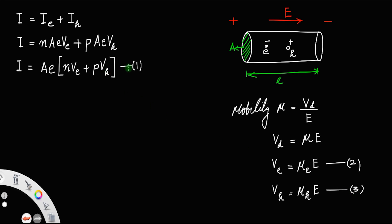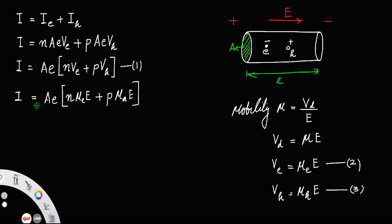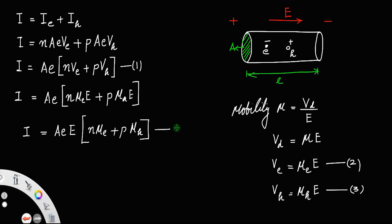Substituting equations 2 and 3 into equation 1, I equals A times e times the quantity N·μ_E plus P·μ_H, all multiplied by E. Let us call this equation number 4.